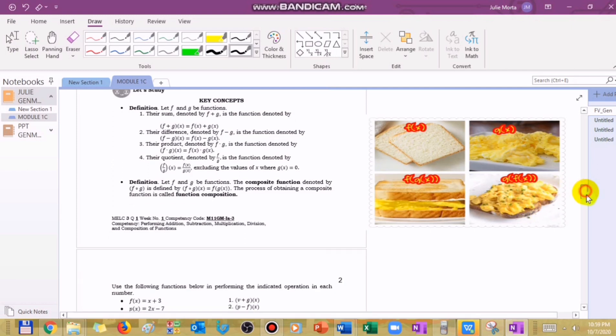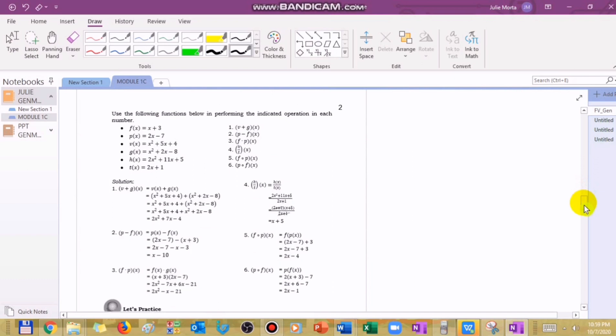Now let's go to the examples. Notice there are given functions: f of x equals x plus 3, p of x, and so on, up to t of x equals 2x plus 1. Now in number 1, v plus g of x. What are we being asked to do? Add the function v of x to g of x. Where is v of x? This is v of x. The meaning of v plus g of x is function v of x added to function g of x.